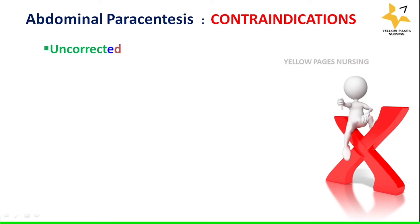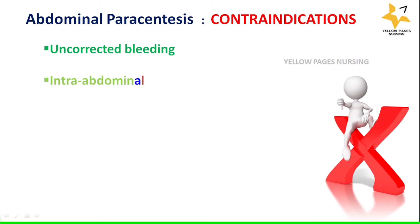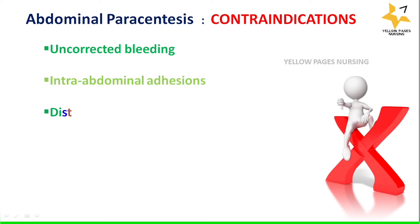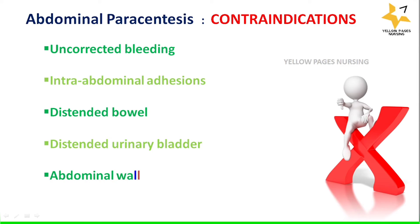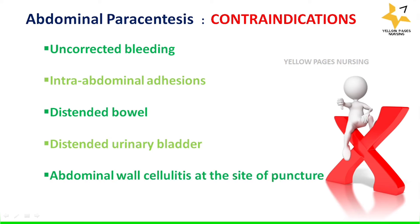Let's look at the conditions where abdominal paracentesis is contraindicated. These include uncorrected bleeding, intra-abdominal adhesions, distended bowels, distended urinary bladder, abdominal wall cellulitis at the site of puncture, and pregnancy.